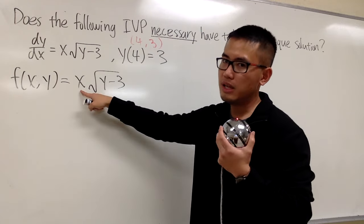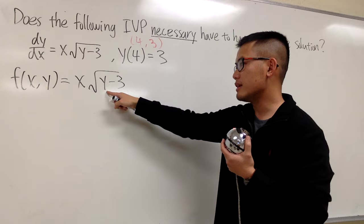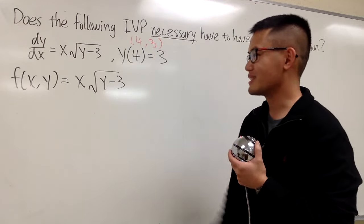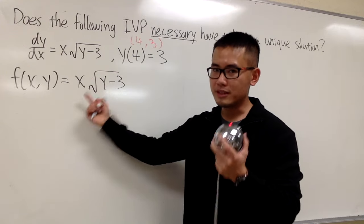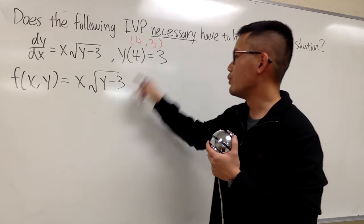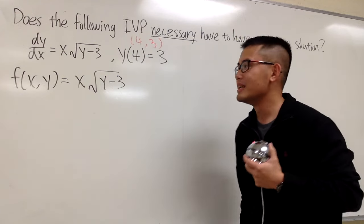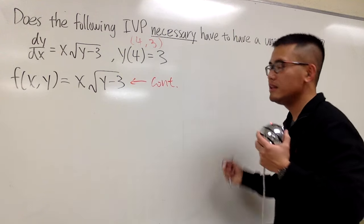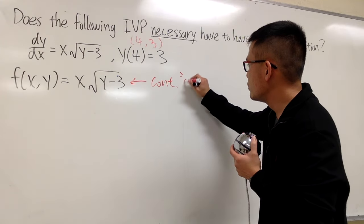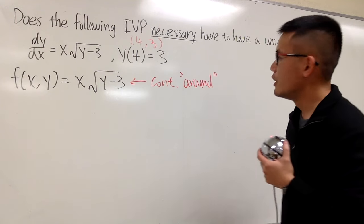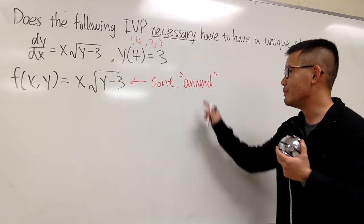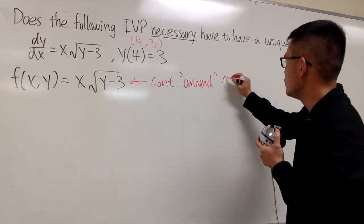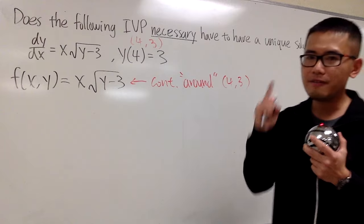Can I plug in 4 into x? Yes, and it works. Can I plug in 3 into y? Yes, because 3 minus 3 is 0, and the square root of 0 is fine. This is just x, which is continuous. Square root functions with nice numbers inside are also continuous. So I will just say this is continuous — it is continuous around that initial point (4, 3). So that starts my first check.